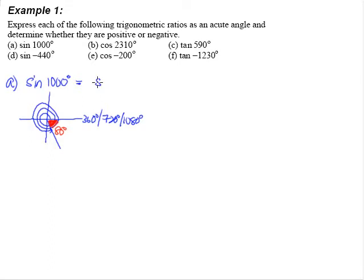The only problem is that this acute angle, or basic angle, is now in the fourth quadrant. Being a sine — a trigonometric ratio of sine — in the fourth quadrant means the answer will have to be negative.